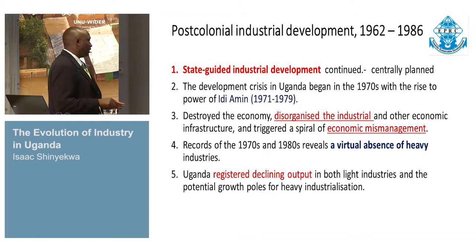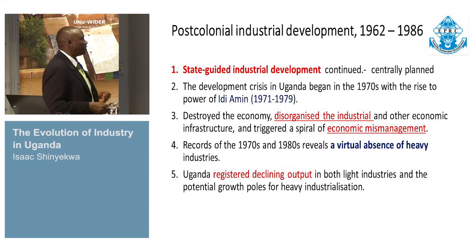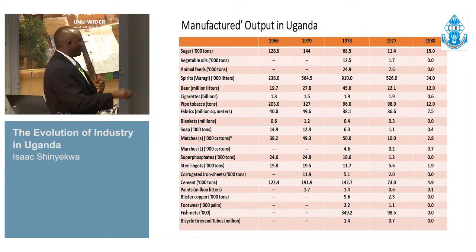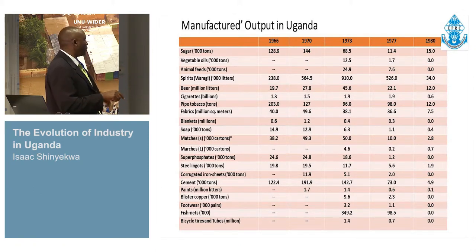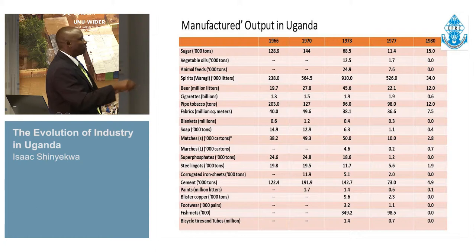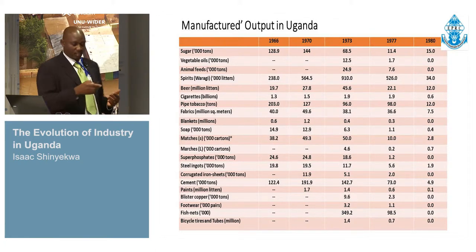This decline killed the potential growth poles for industrialization in the country. Just to give you a glimpse — looking at manufactured outputs in Uganda across various products including vegetable oil, blankets, and fabrics — you can see that in the 1960s, in terms of tonnage, there is an increment up to 1970, then there's a decline. This line is a little bit thin, just to demonstrate that there was a decline during that period.